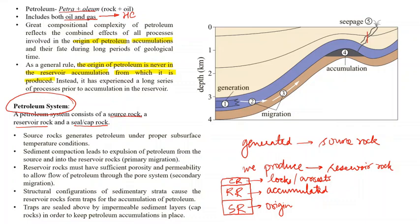Imagine that petroleum is formed in the source rock. From there it has moved to the reservoir rock, but if there is no cap rock, it might happen that petroleum may go somewhere else. So if you look at this diagram — it's a beautiful diagram — number one here is where the petroleum gets generated. This is the source rock.